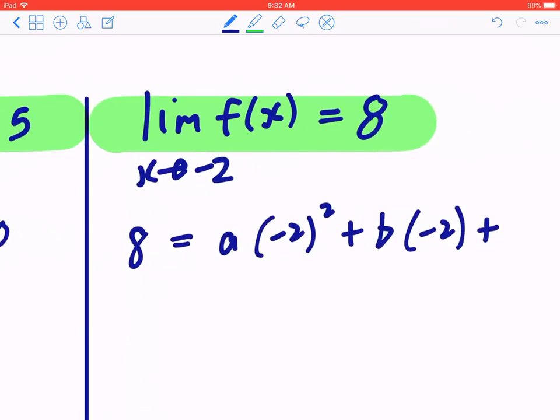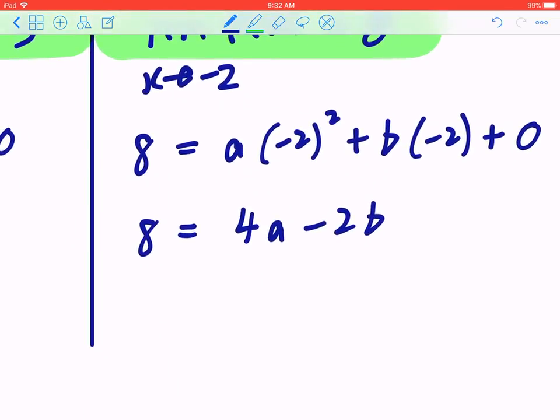Again, there is a c value, which we have found, that's going to be zero. So this implies that eight equals four times a minus two b. You can divide the left-hand side and the right-hand side by two. So four equals two a minus b.